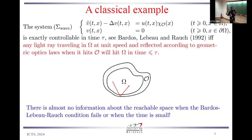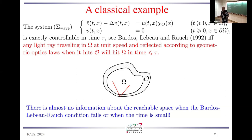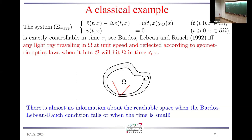This is a particular case where we know the reachable space in the exact controllability case — it's the whole space. But more interesting situations are exactly those in which this is not the case. For instance, if I want to say what is the reachable space at a time smaller than the critical time tau, very few results are available. Or if my control domain is very small — for instance a small ball in the middle — there are some results due to Lebeau and Robbiano, but again very few things are known.